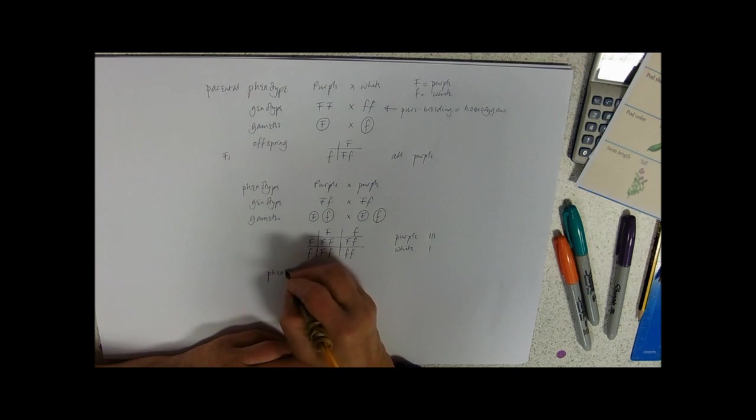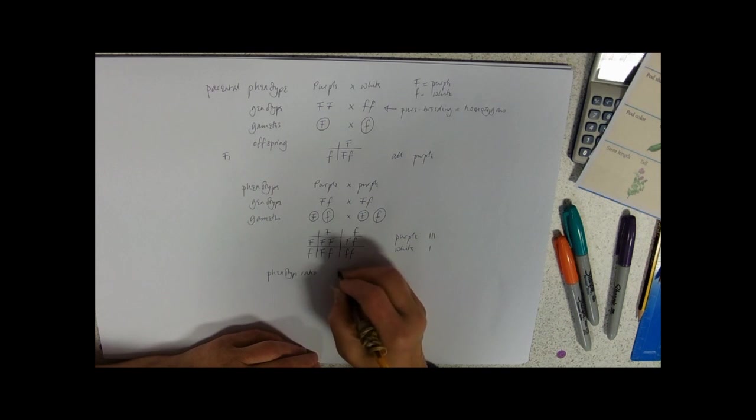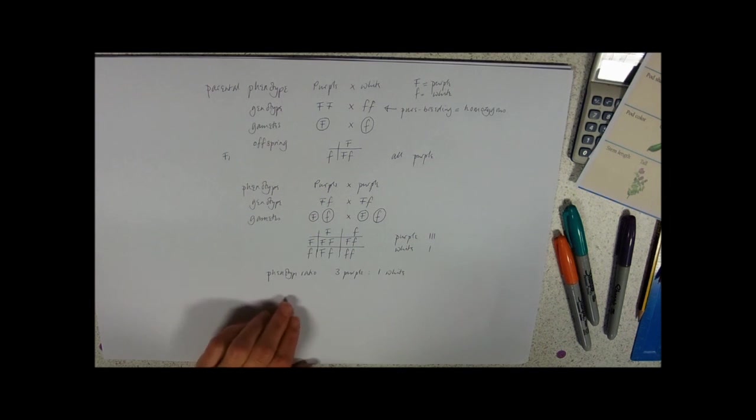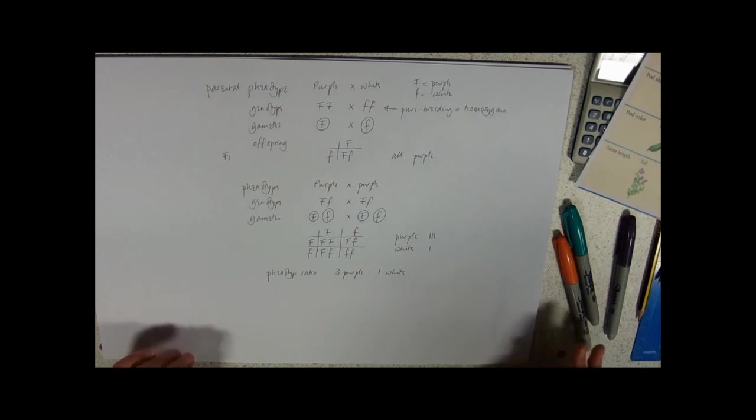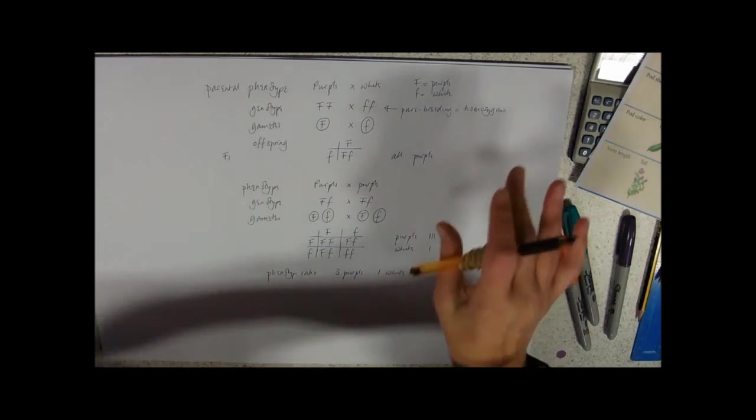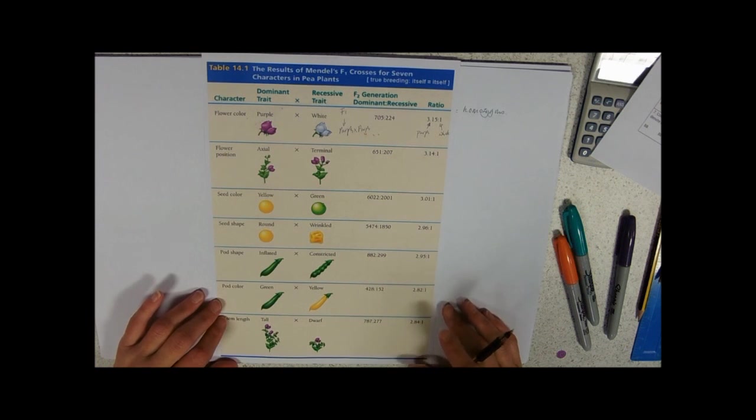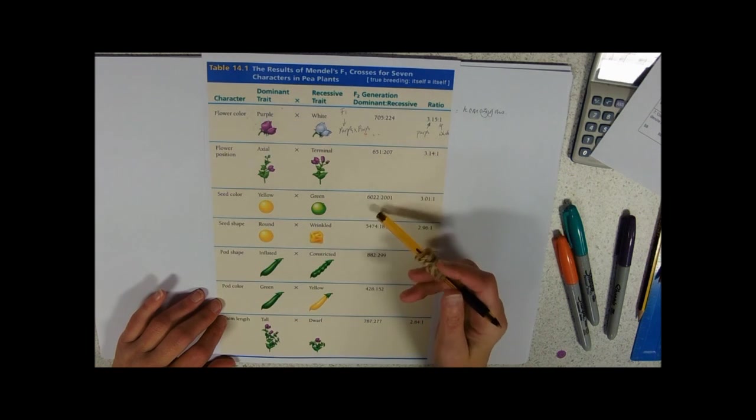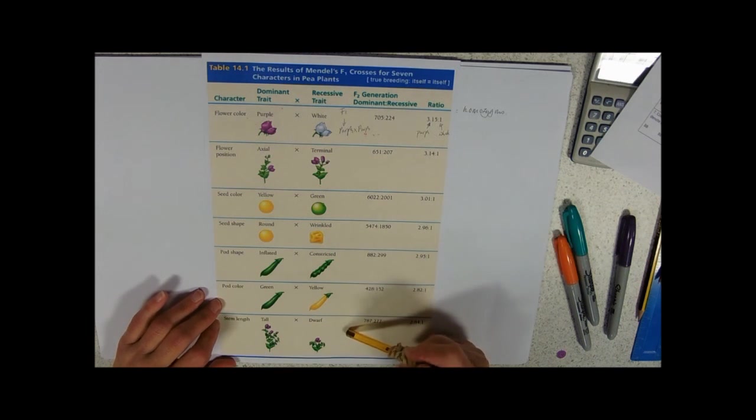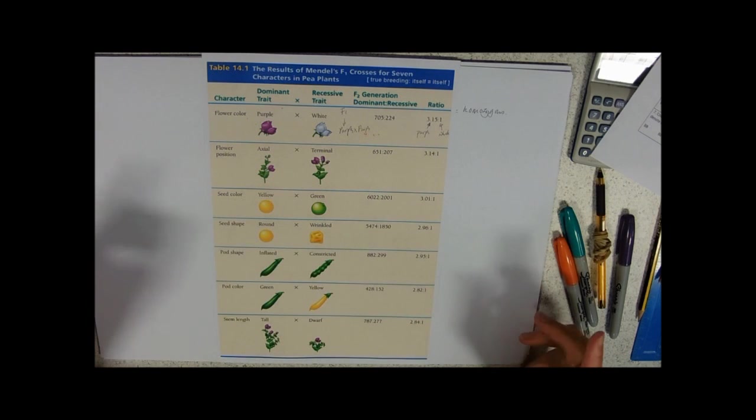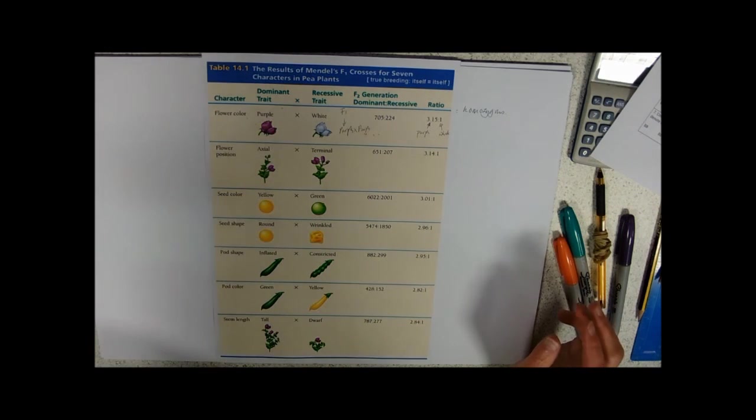So our phenotype ratio will be three purple to one white. And in general, you should put the phenotypes in. Especially if they ask for a phenotype ratio. If they just say the ratio, that's fine. Okay. So, I've done that for the purple plants. If I was you, now, just to make sure that you understand it, I would do it for the flower position, seed colour, seed shape, pod shape, pod colour, stem length. Then you'll actually know, yeah, I can do that. I will do a couple of sort of unfamiliar scenario questions, just to help you. Okay. Great. Thanks to you. Look.